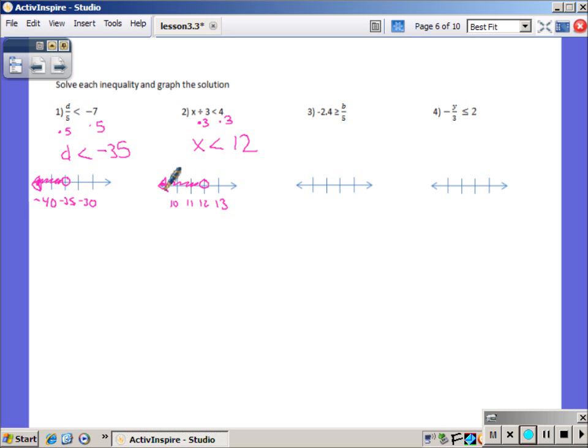For number three, our b is being divided by 5. To get rid of that division, we will multiply by 5. Very similar to number one, except my variable's on the other side. Negative 2.4 times 5 is negative 12. Do I need to flip my inequality symbol? No. Yes, the answer is negative, but what did you multiply by? You multiplied by a positive, so that inequality symbol stays exactly the way it was.